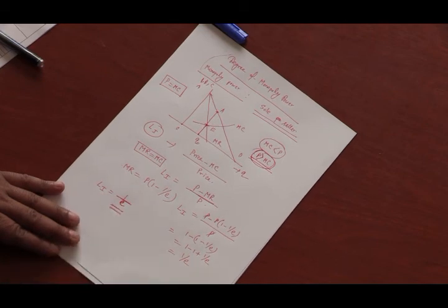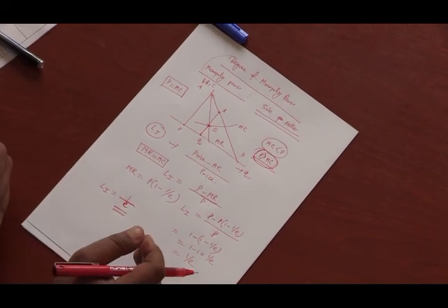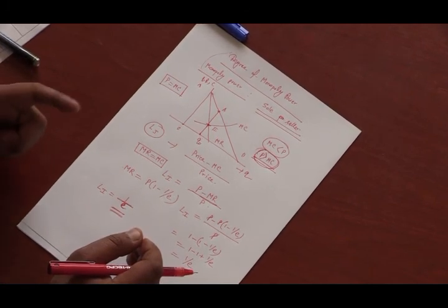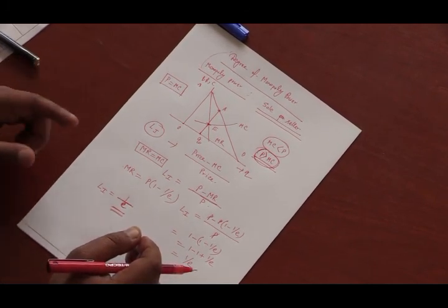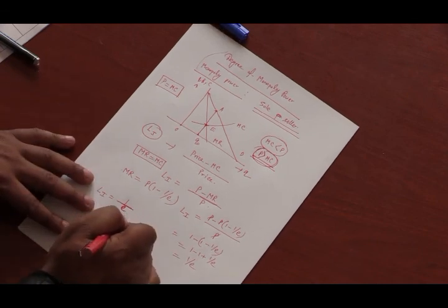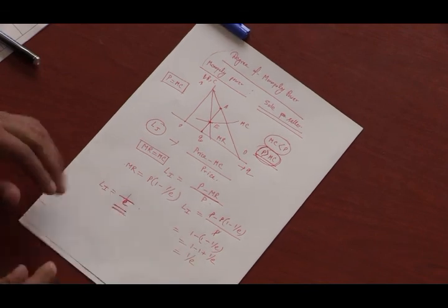So, higher the price elasticity of demand, lower will be the power of the monopolist to charge price above the marginal cost and vice versa. So, this is the Lerner's index of monopoly power. It is inversely related to the price elasticity of demand.